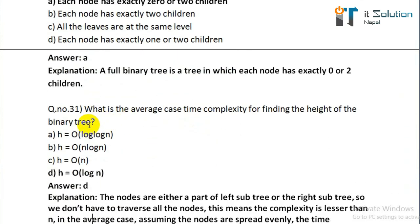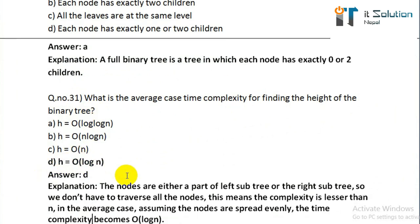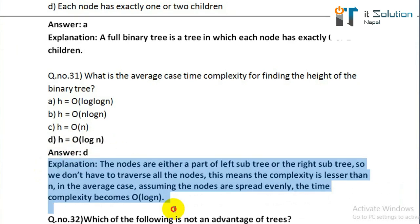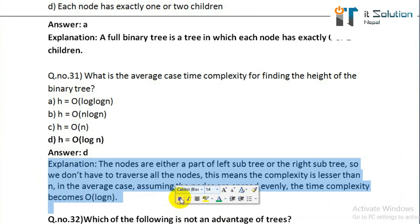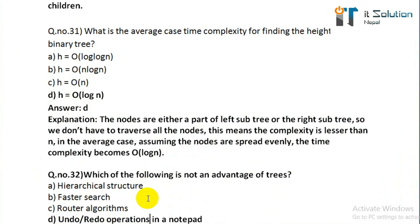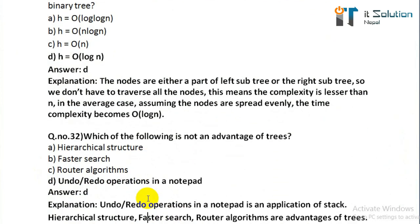Question number thirty-one: what is the average case time complexity for finding the height of a binary tree? Its correct answer is option D, h = O(log n). Question number thirty-two: which of the following is not an advantage of trees? Its correct answer is undo/redo operation in Notepad, option D.